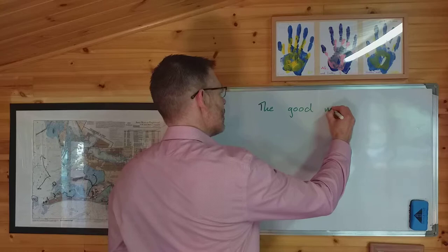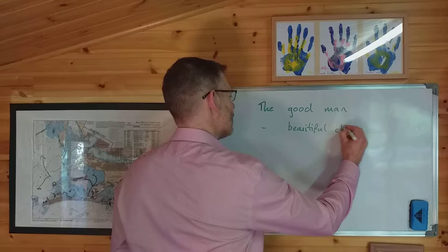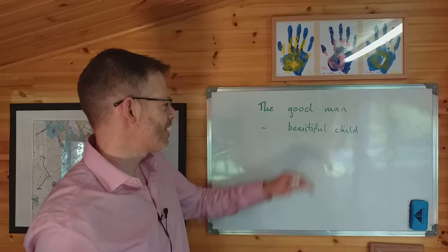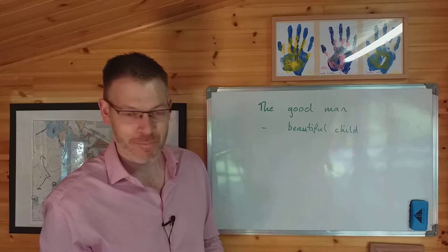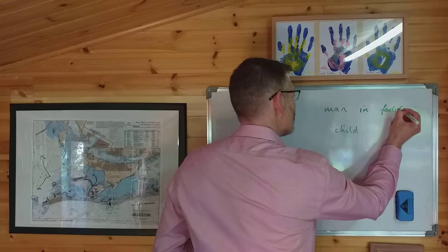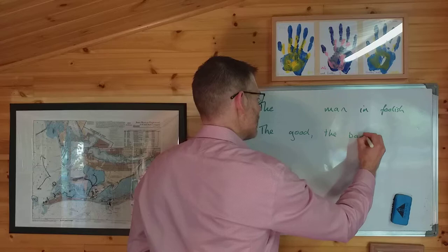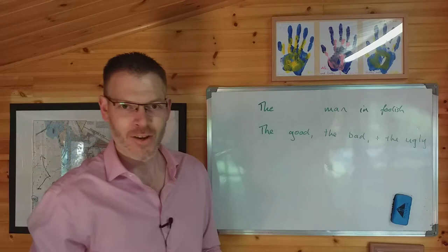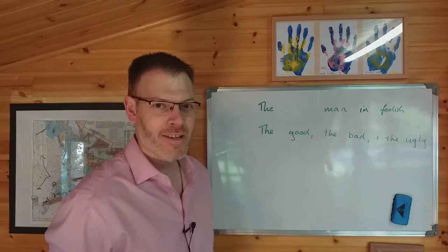So for example, here are some phrases in English: the good man, or the beautiful child. The adjectives in these phrases are 'good' and 'beautiful.' You can also imagine using adjectives in a slightly different way: the man is foolish, selfish. Or in a slightly different way again: the good, the bad, and the ugly.